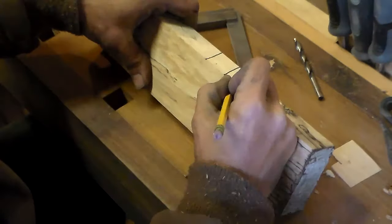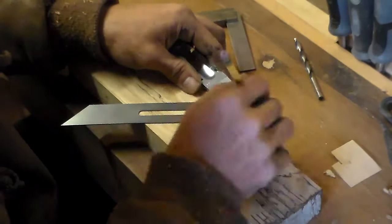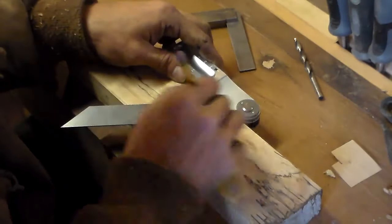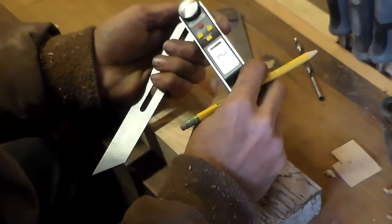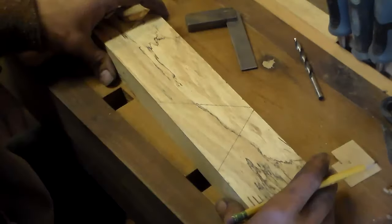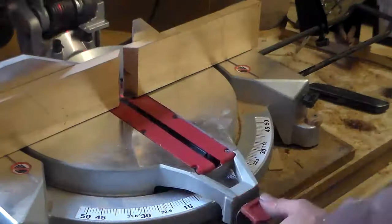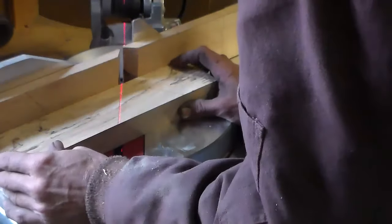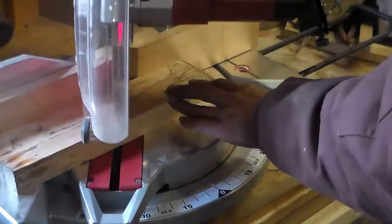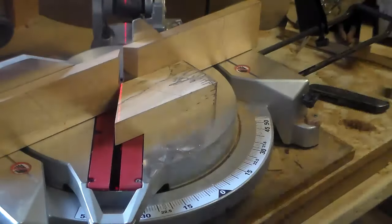This is the block I'm going to use for the body. It is pecan that has spalted rather well but it's still pretty hard. When I glue the sides back onto it, I want it to all look like one piece. I like the spalted pattern so I'm trying to keep everything lined up, that's what the two little black lines across the bottom are there.